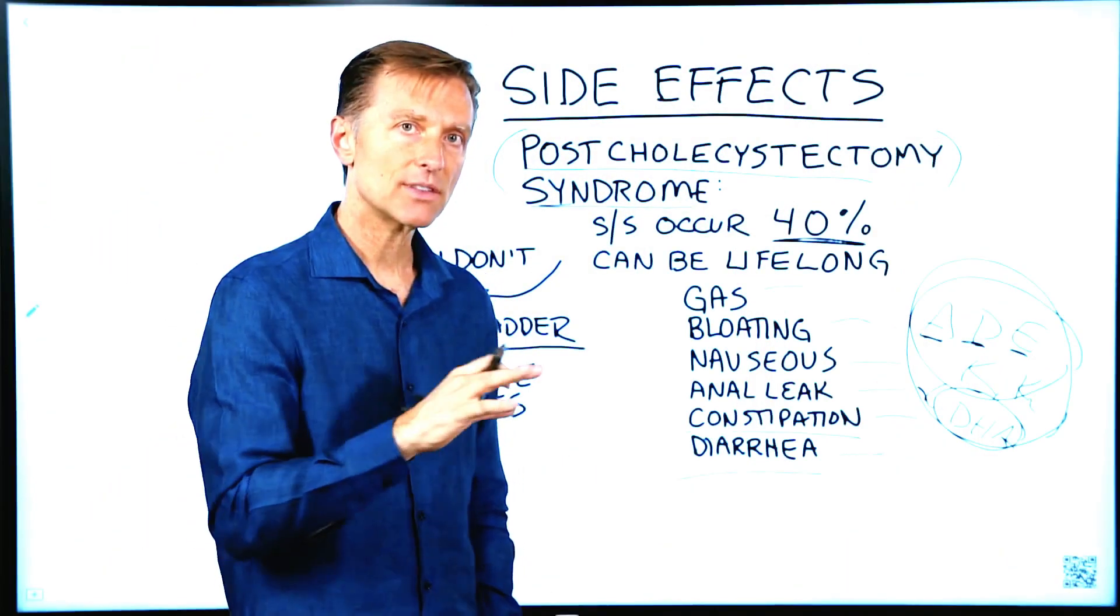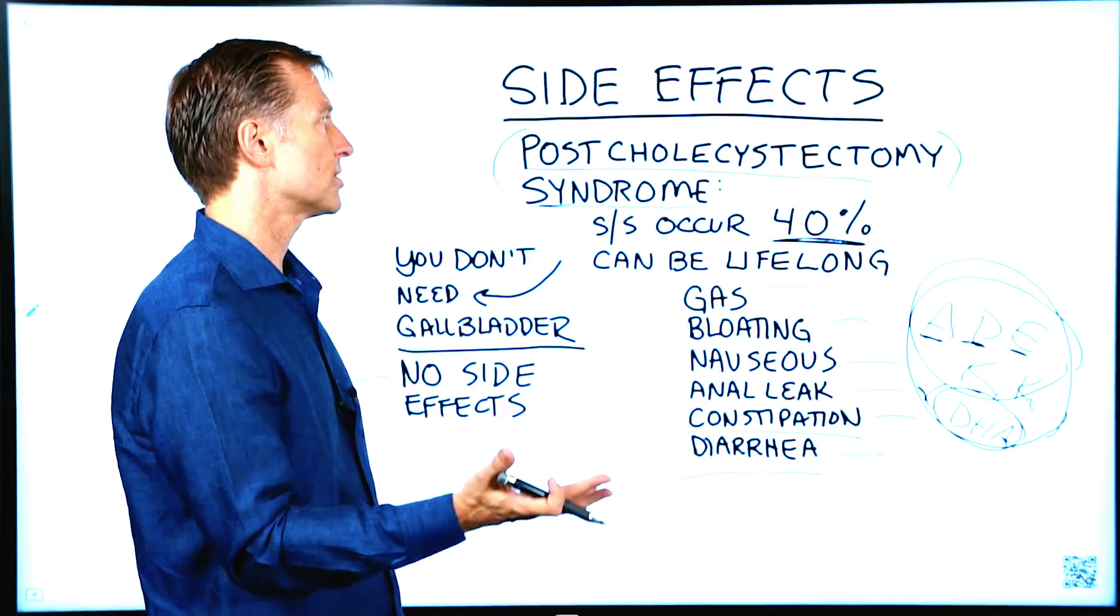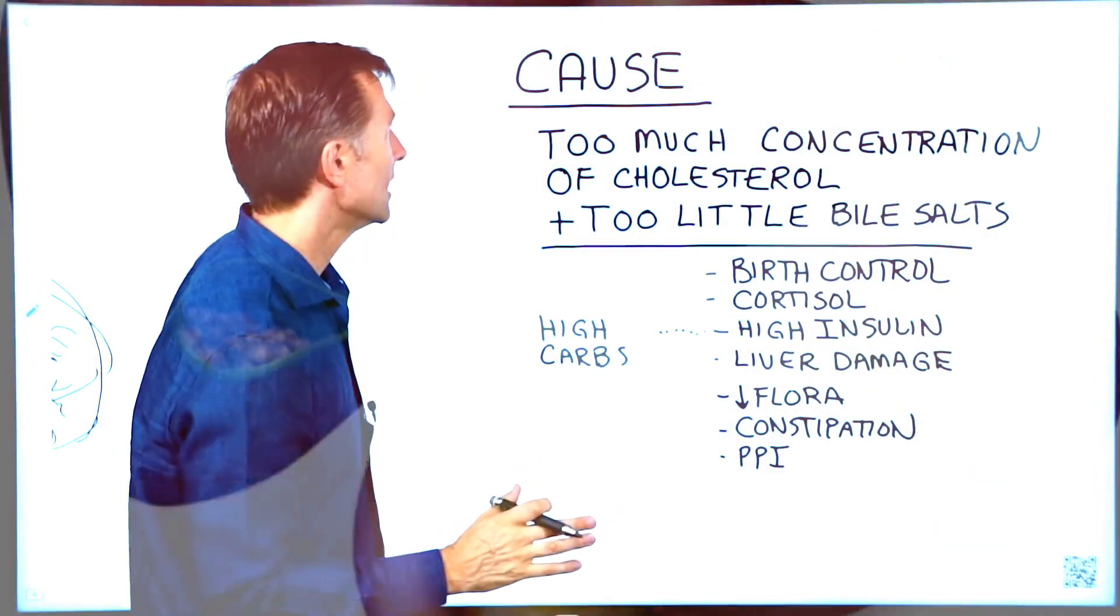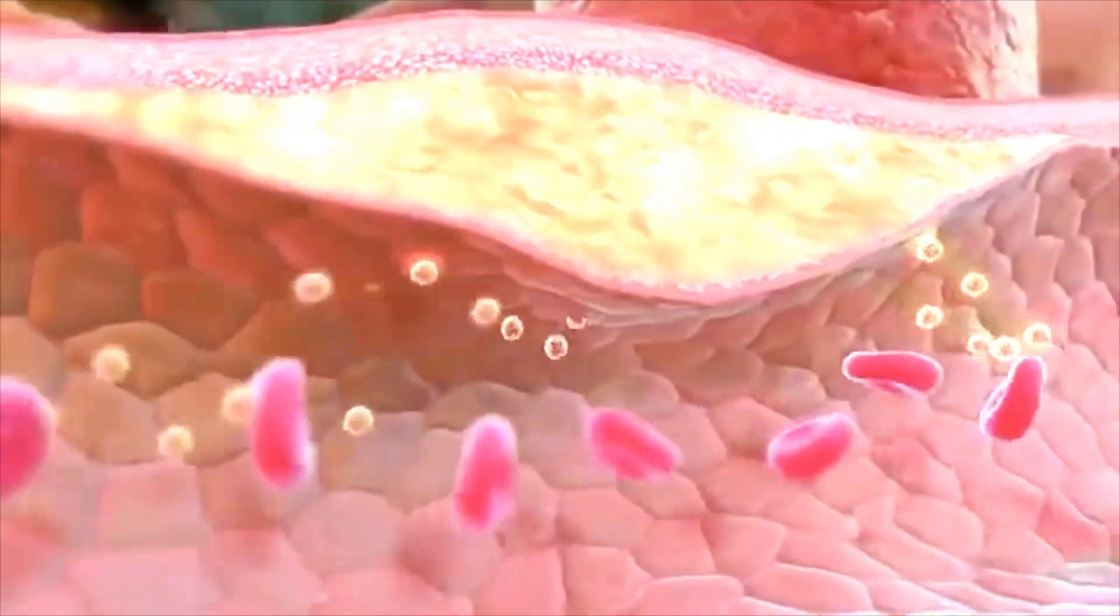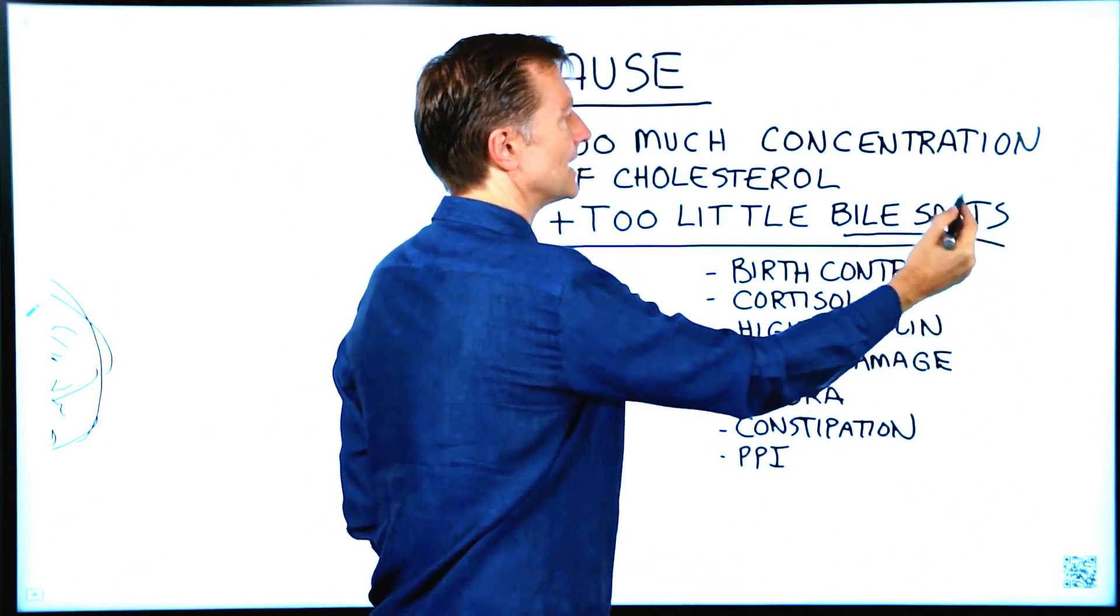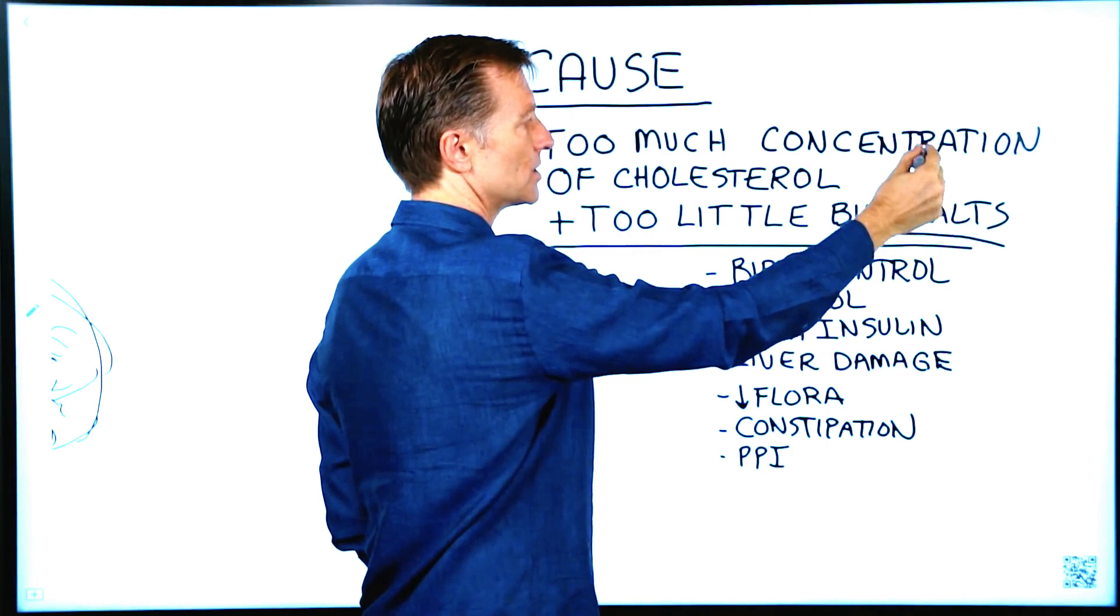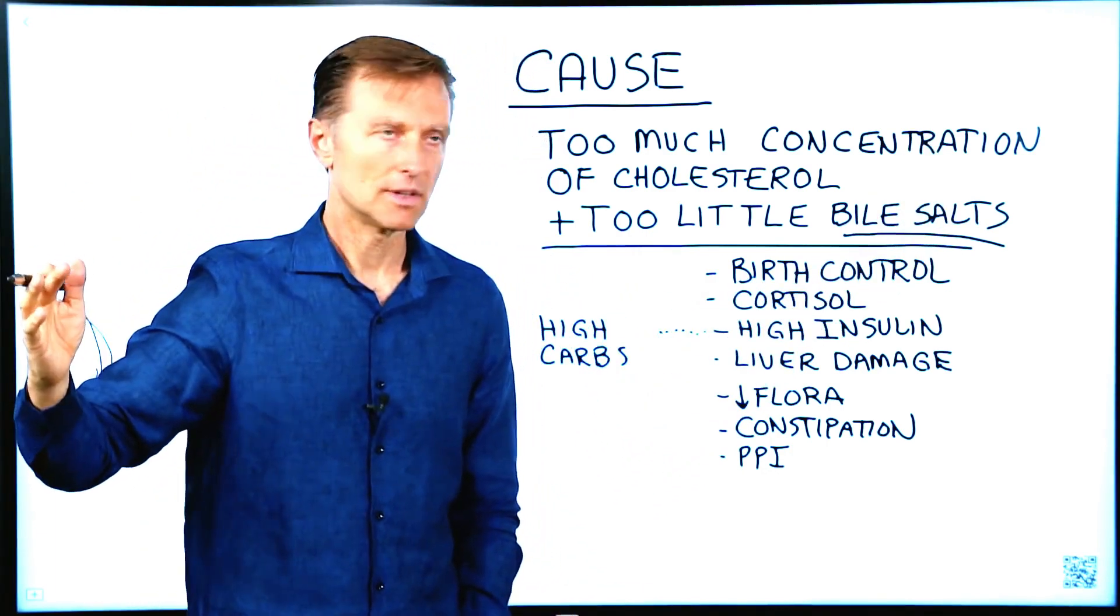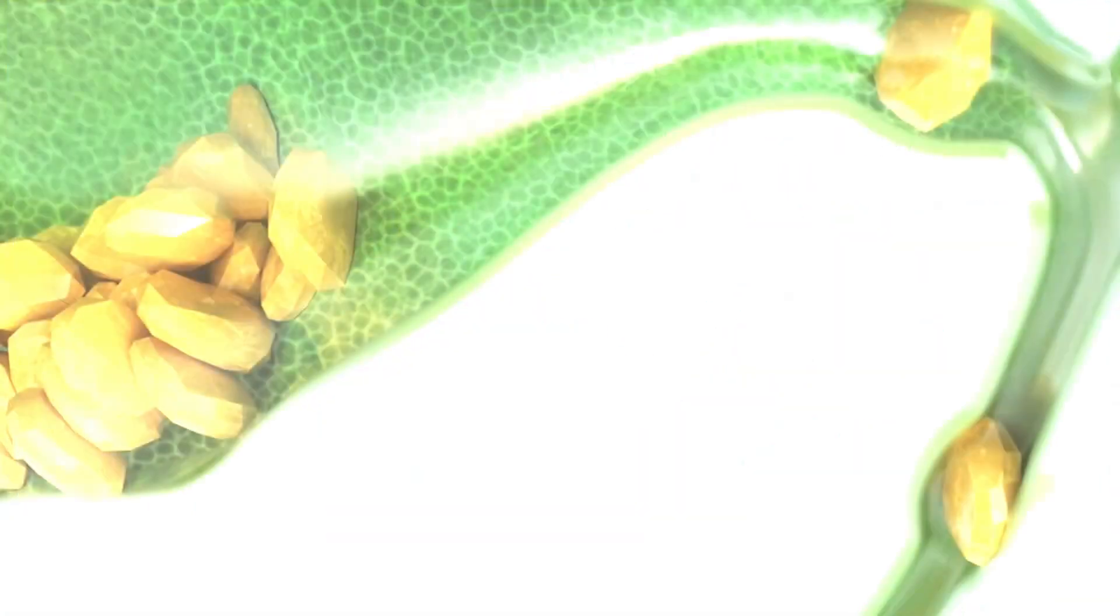So what I'm trying to point out is this: If you're going to have the gallbladder out, there should be a very good reason, not just one little stone. So now let's talk about what causes a stone. It's really a combination of two things: too much concentration of cholesterol plus too little bile salts. The bile salts help to break down the cholesterol. So it's a combination of both. So it's not just about having high cholesterol. You also have to have a deficiency of bile salts to have a stone form.